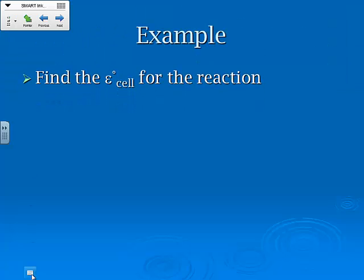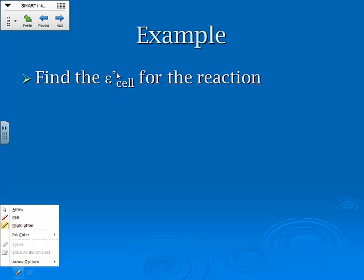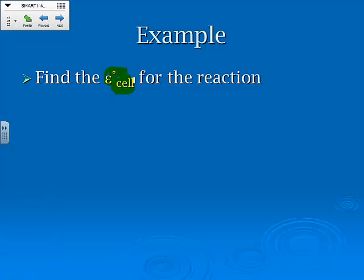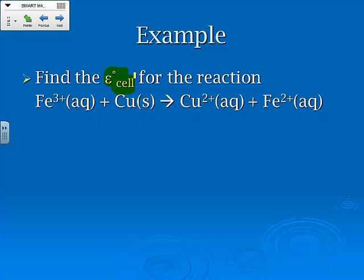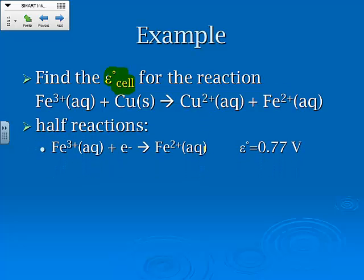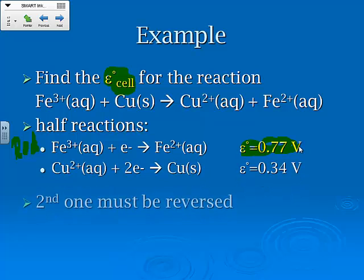The next example, we want to find the cell potential for the reaction. So if we do that, we're going to have to use those values that we just had. In this one, we're looking at the reaction between iron 3 and copper to generate copper 2 and iron 2. And so the half reactions for these, you have iron 3+ plus an electron to go from iron 3 to iron 2. Just as a reminder, this would be our reduction reaction. That's got a voltage of 0.77 volts.